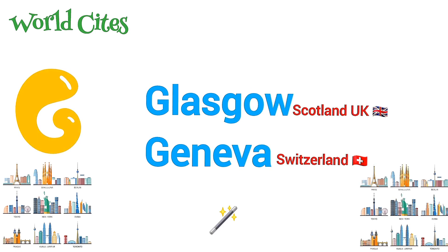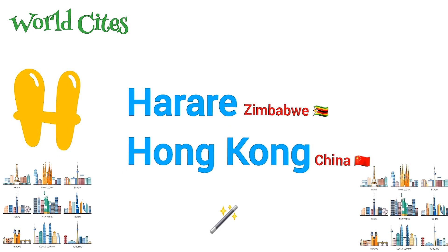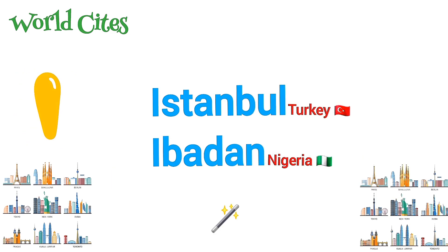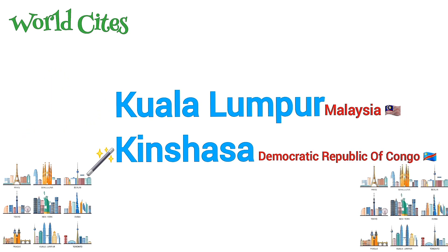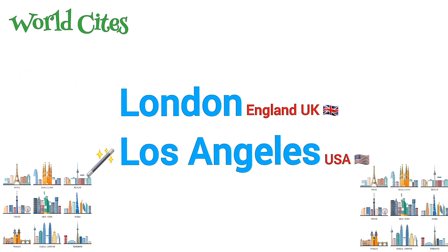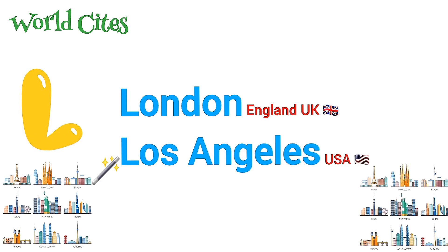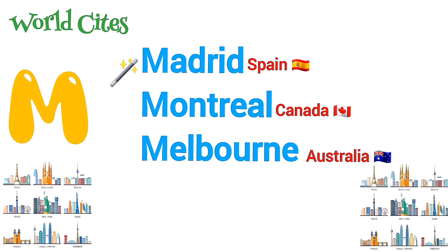G is for Glasgow, Geneva. H is for Harare, Hong Kong. I is for Istanbul, Ibadan. J is for Johannesburg, Jakarta. K is for Kuala Lumpur, Kinshasa. L is for London, Los Angeles. M is for Madrid, Montreal, Melbourne.